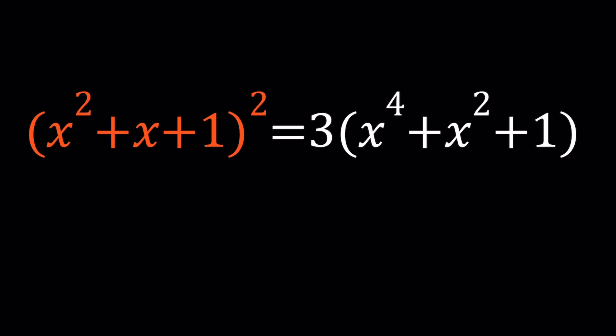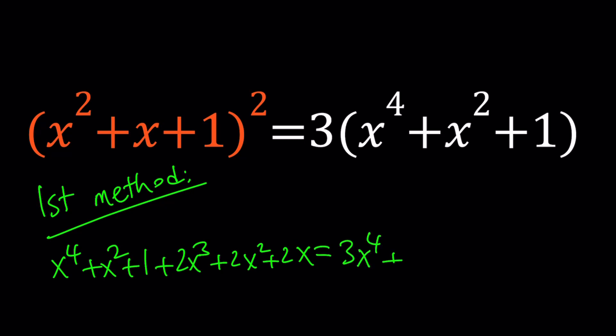I'll be presenting 3 methods and let's start with the first one. So the first method is called brute force. We're going to expand everything. When we do, we get x to the 4th plus x squared plus 1 plus 2x cubed plus 2x squared plus 2x, and on the right hand side, we get 3x to the 4th plus 3x squared plus 3.